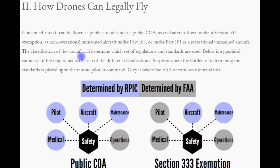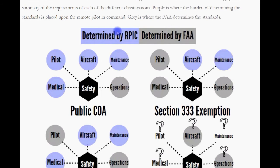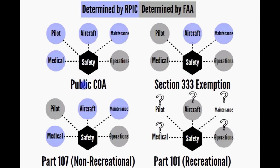So, how can drones legally fly? Unmanned aircraft can be flown as public aircraft under a public COA, as a civil aircraft flown under a Section 333 exemption, as non-recreational unmanned aircraft under Part 107, or under Part 101 as a recreational unmanned aircraft. The classification of the aircraft will determine which set of regulations and standards are used. Below is a graphical summary of the requirements for each classification, and here's a helpful breakdown of the four major areas that schools could potentially fly under.